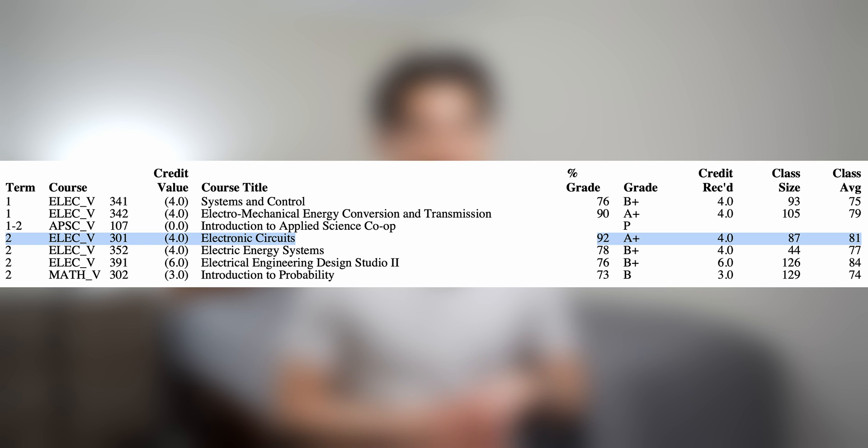And for those of you who are curious, I scored a 92% in ELEC 301 and the class average was 81%. I honestly have no idea how this annoying time sink of a course ended up tying for my highest grade in my university career so far with Civil 250.